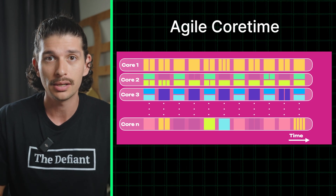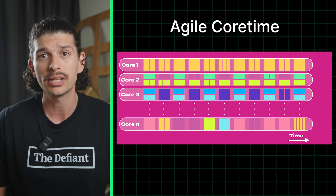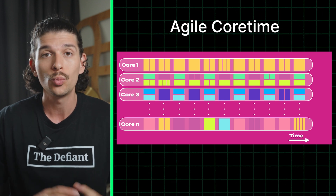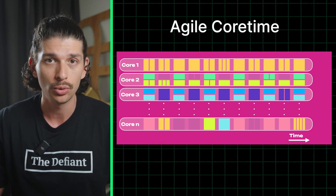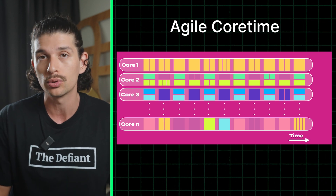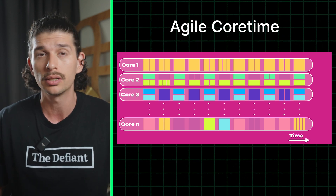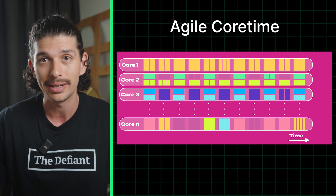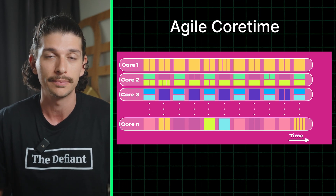Our second system upgrade to discuss is agile core time, which presents a flexible approach to core block space rights within Polkadot. With the implementation of agile core time, developers will have the option of reserving core time in bulk, which can prevent fee spikes. Alternatively, developers can purchase small amounts of on-demand core time in order to reduce the barrier to entry.